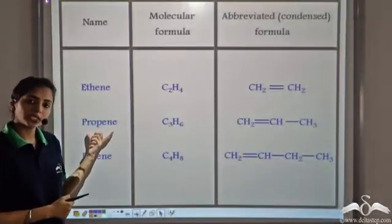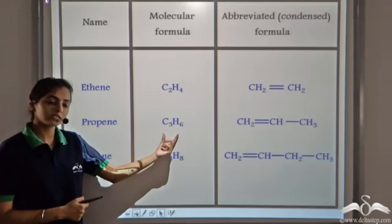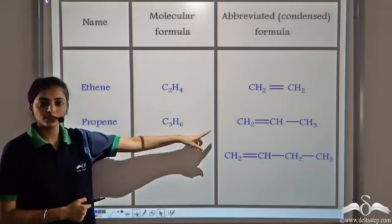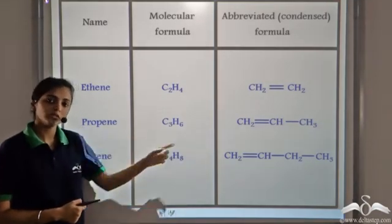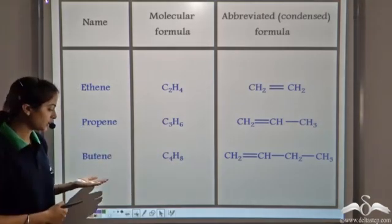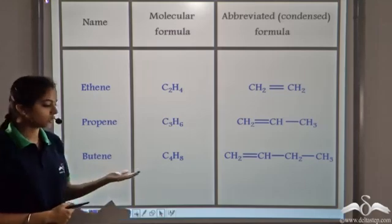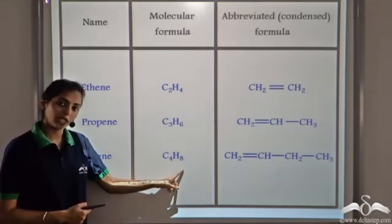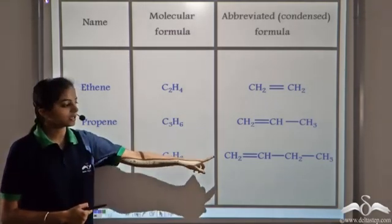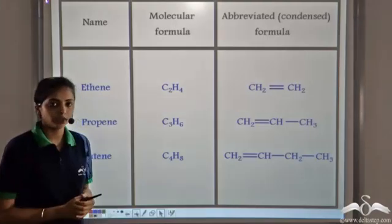The second member is propene, having the molecular formula C3H6, and that is its condensed or abbreviated formula. Similarly, we have butene, with the molecular formula C4H8, and that is its condensed or abbreviated formula.